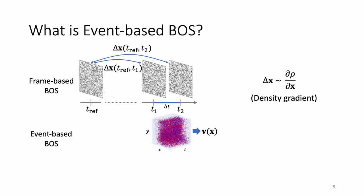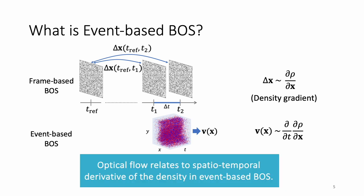But in event-based BOS, the event camera just captures the changes within a short-time interval. So we cannot compare with the reference frame, which is too far away from the current timestamp. We demonstrate that optical flow in these short-time intervals is related to the spatial-temporal derivative of the media density.